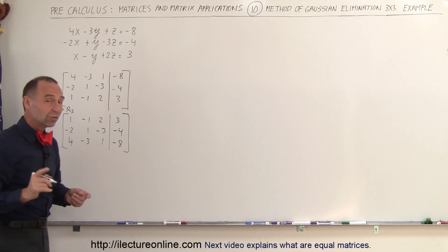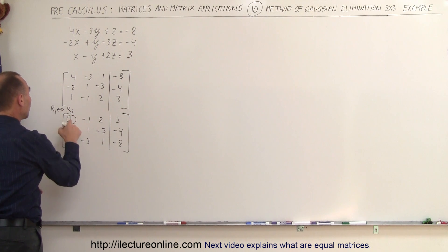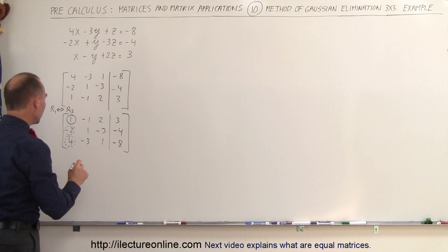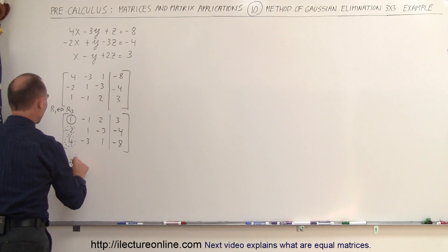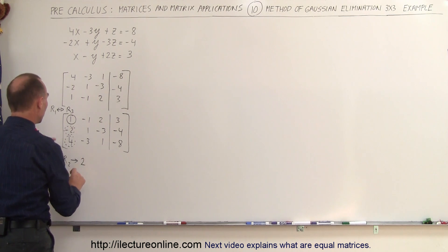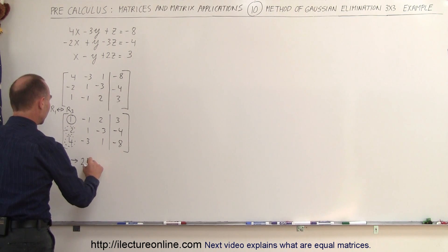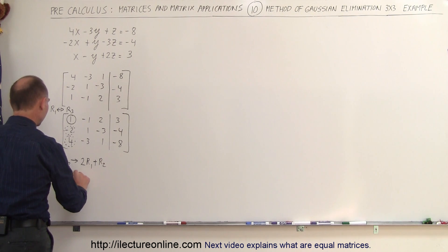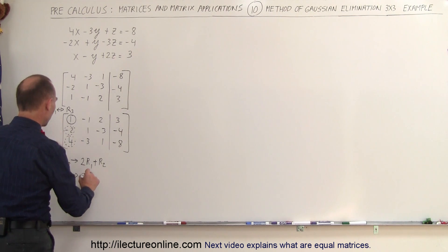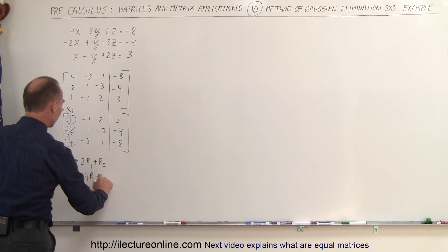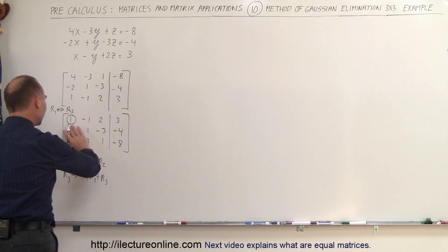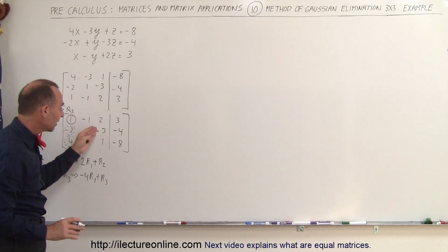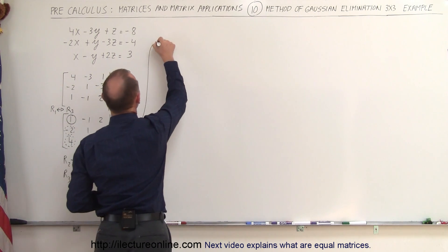There's your new augmented matrix, which now has a 1 in the upper left corner. We will use it to turn the entries below it into 0s by taking the second row and replacing it by positive 2 times the row with the 1 in it, added to the second row. Then we take the third row and replace it by negative 4 times the row with the 1, added to the third row. When we do that, we turn those entries into 0s.